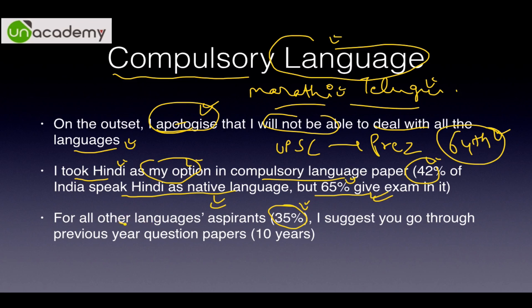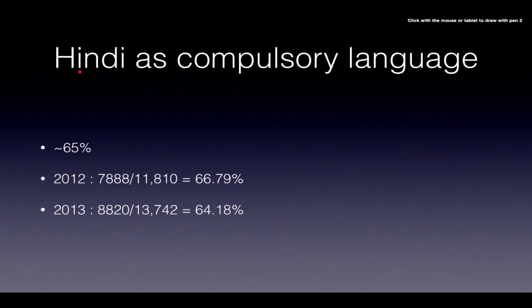For all other language candidates, I humbly suggest that you go through the last 10 years' question papers and get a good book — that's it. You will be able to score decent marks. You just need to pass. Hindi as compulsory paper is taken by 65% of the people.